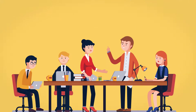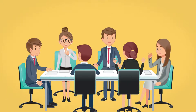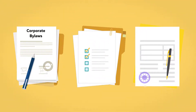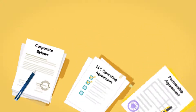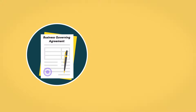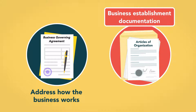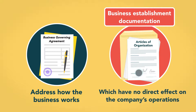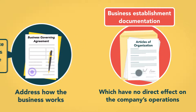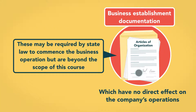Depending on the type of business, governing agreements take different forms and go by different names. The three most common are corporate bylaws, limited liability company (or LLC) operating agreements, and partnership agreements. We must also distinguish business governing agreements, which address how the business works, from business establishment documentation such as articles of organization or incorporation, which have no direct effect on the company's operations. These may be required by state law to commence operation of the business, but are beyond the scope of this course.